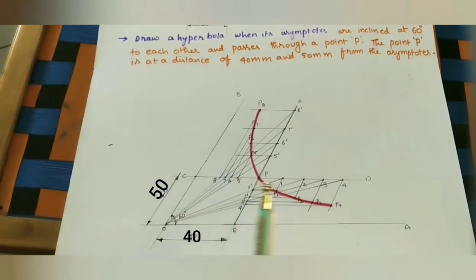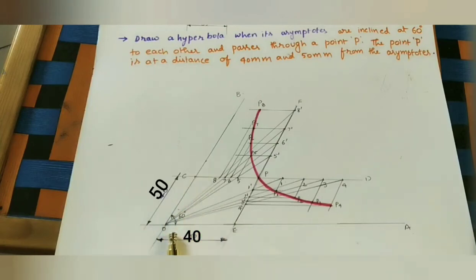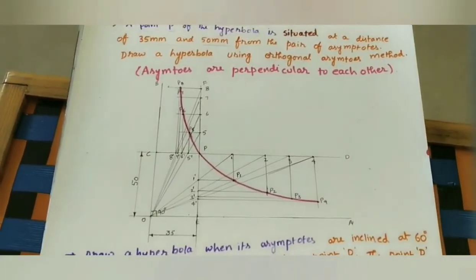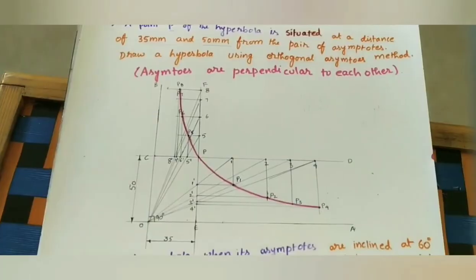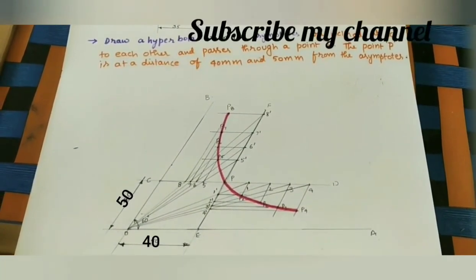This is the required hyperbola. The given dimensions are P at 50mm and 40mm from the two asymptotes, and the dimensional lines should be parallel to the main lines. Since these two asymptotes make a 60-degree angle, this method is called the oblique asymptotes method. If the angle were 90 degrees — as done in the previous class — it would be called the orthogonal asymptotes method.